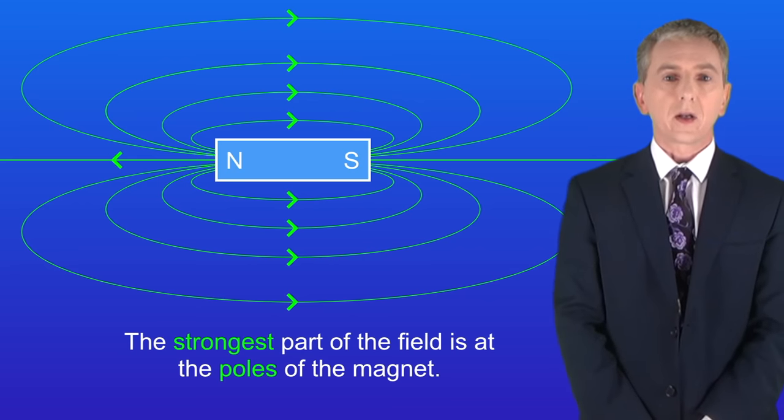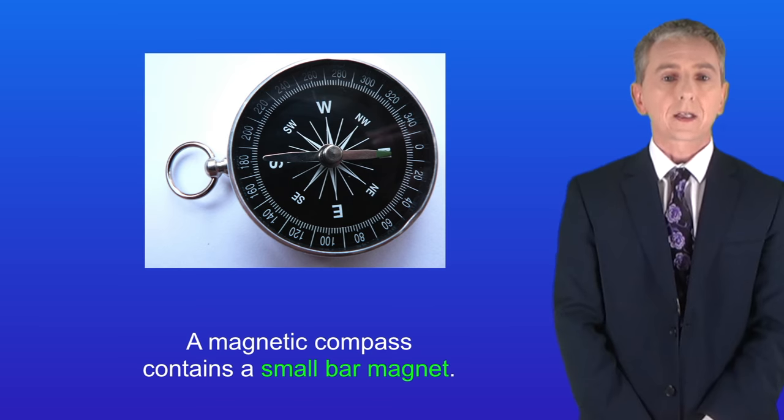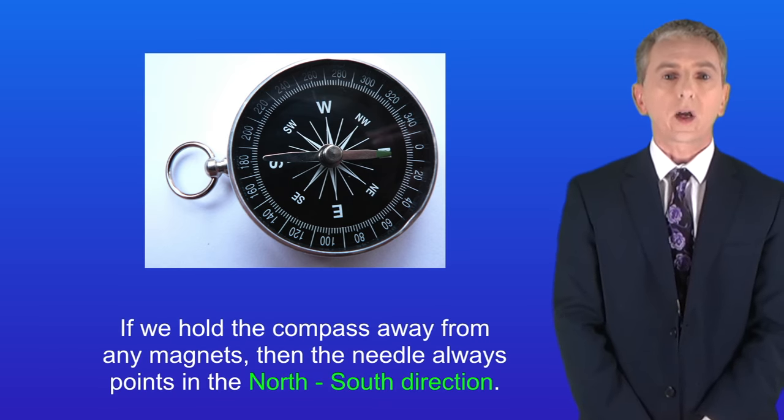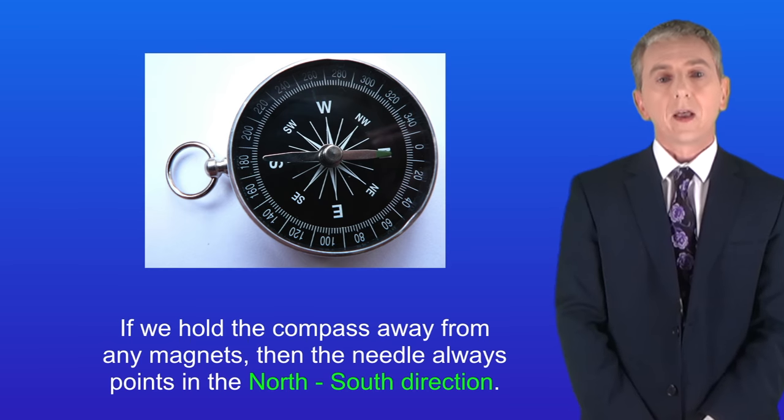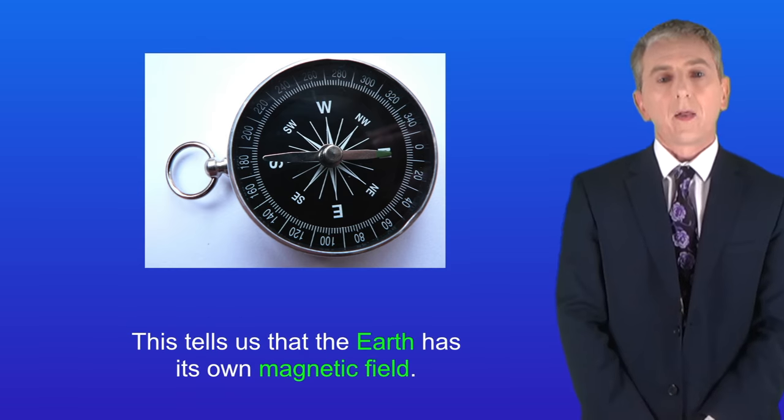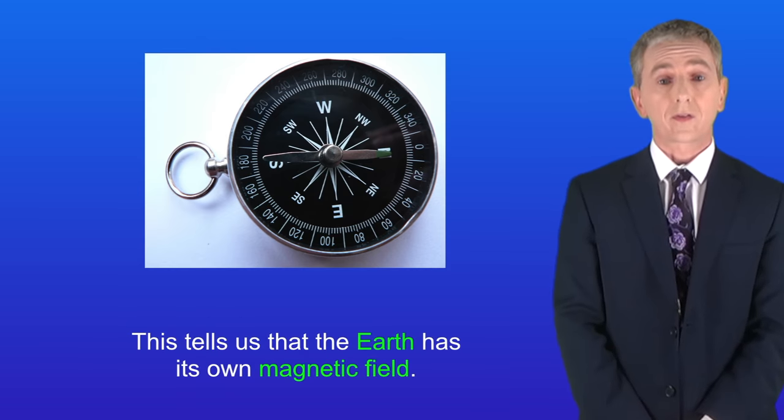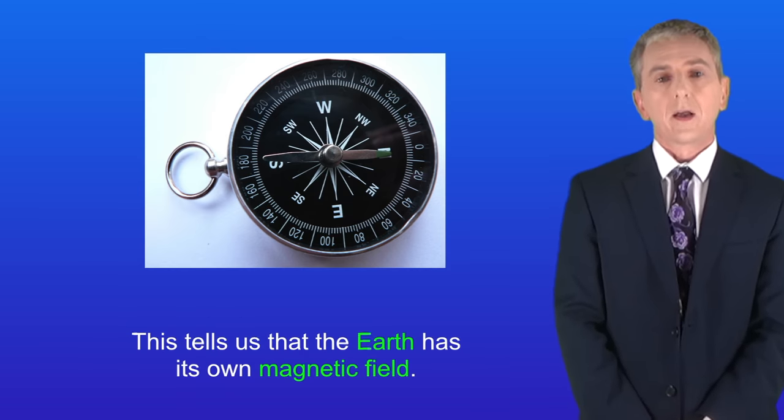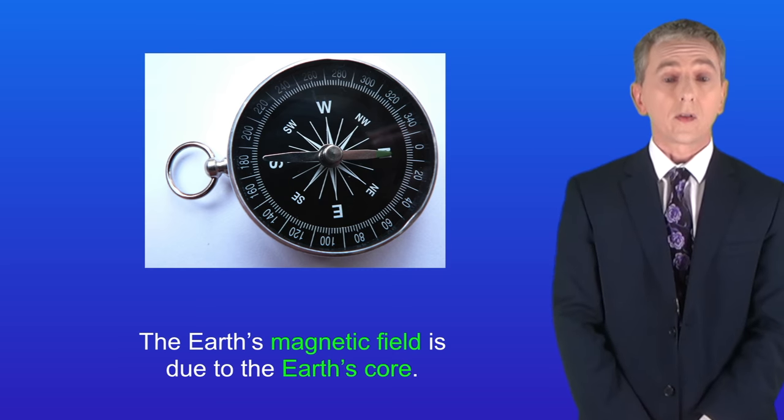Okay we're going to finish now by looking at the earth's magnetic field. We saw earlier that a magnetic compass contains a small bar magnet. If we hold the compass away from any magnets then the needle always points in the north-south direction. This tells us that the earth has its own magnetic field. And the earth's magnetic field is due to the earth's core.